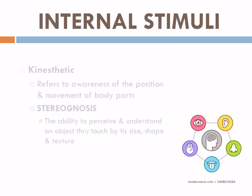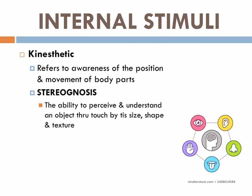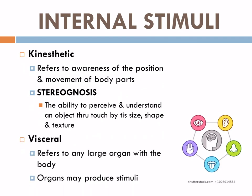We also have internal stimuli. We have kinesthetic, which refers to awareness of the position and movement of the body. We also have stereognosis, which is the ability to perceive and understand an object through touch — by its size, shape, and texture. We also have visceral, which refers to any large organ within the body. Organs inside your body can actually produce a stimulus, so that is why it is considered internal stimuli.